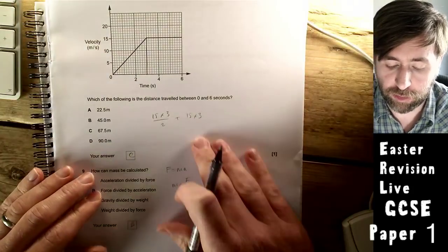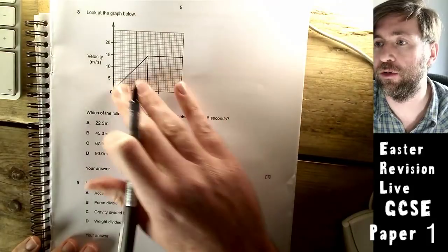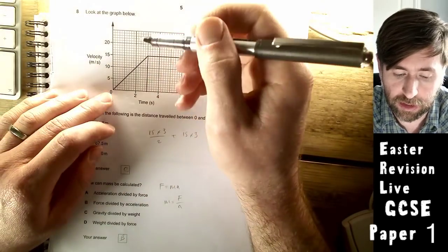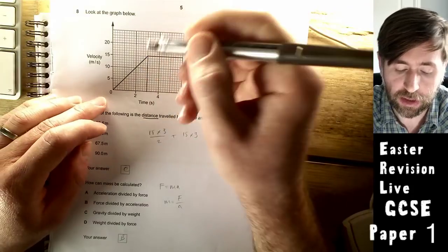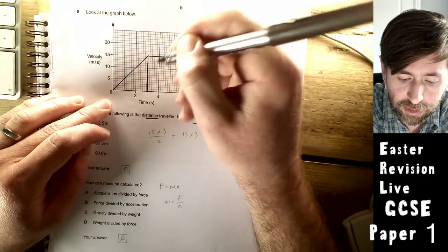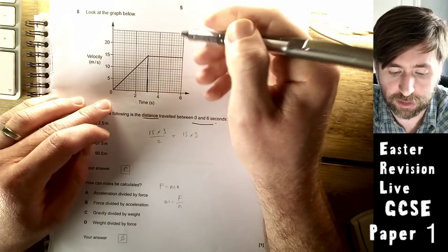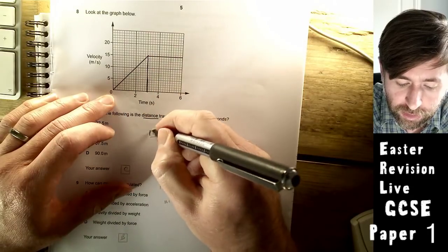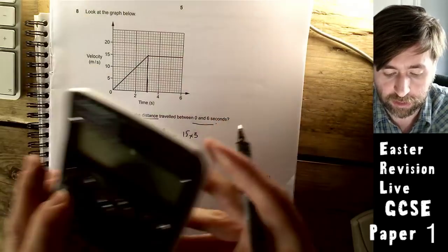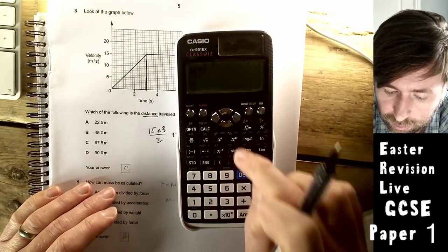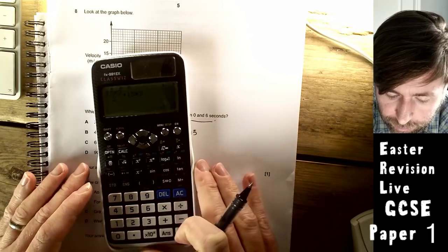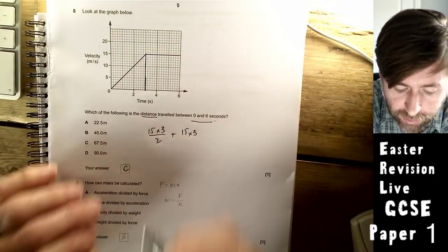Which of the following is distance traveled between 0 and 6 seconds? You've got a velocity time graph. The distance is the area underneath a velocity time graph. Let's just divide it into two shapes. Area of a triangle is base times height over 2, plus the area of the little square, 15 times 3. Add those together in your calculator. Fraction 15 times 3 over 2, and then add 15 times 3, and boom, 67.5. The answer is C.